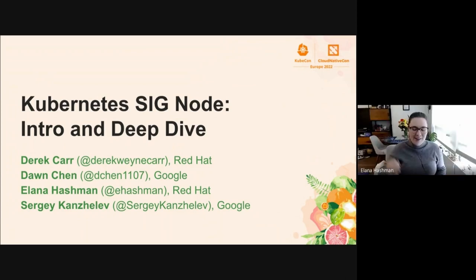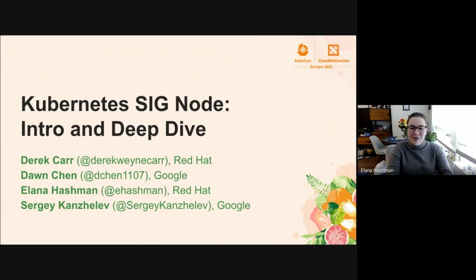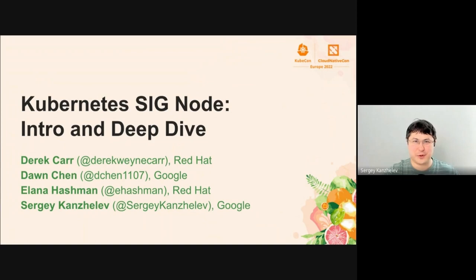Hey, everybody. I'm Alana Hashman. I currently work on the OpenShift engineering node team. I've been working on Kubernetes since about 2018, 2019. You might recognize me as the co-chair of SIG Instrumentation, but I also work in SIG Node and currently help lead the CI subproject with Sergey. Hello, I'm Sergey Kancelev. I'm working for Google and very excited to be here.